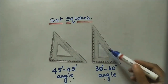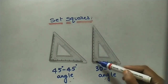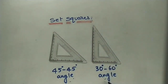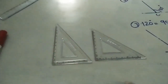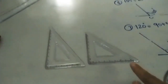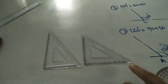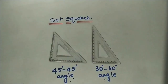This right angle triangle has angles of 60, 30, and 90 degrees — we can call it the 30-60 degree set square. Using these set squares, we can mark angles like 30, 45, 60, 75, 90 degrees, and above 90 degrees. The 45-45 set square has two acute angles, and the 30-60 set square also has two acute angles — meaning angles less than 90 degrees.